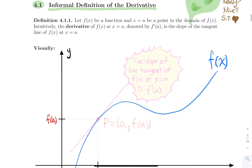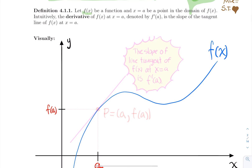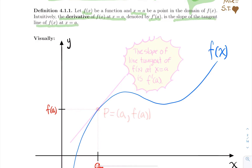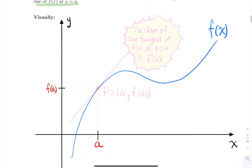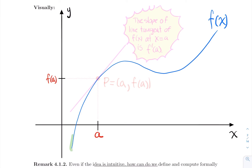First definition: if you start with a function f(x) at a point a inside the domain of your function, intuitively the derivative of f(x) at a, denoted by f prime of a, is the slope of the tangent line of f(x) at x equal a. So visually, I've drawn my function f(x) in blue, I've picked a point a in the domain, and I've illustrated the output at a. What is the derivative of f(x) at x equal a?